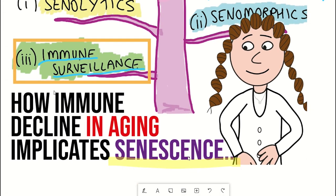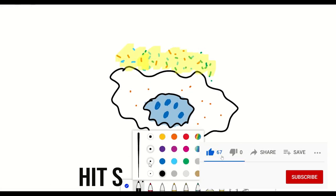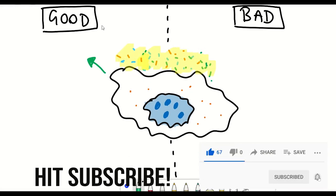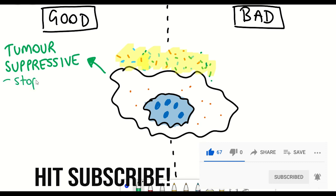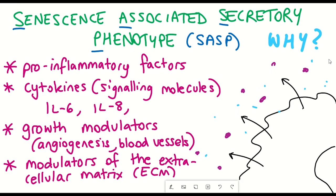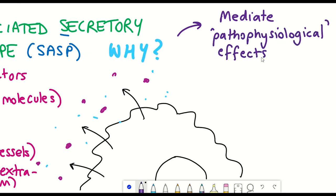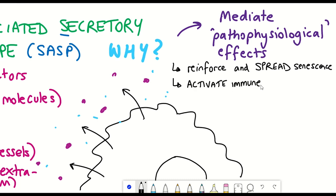If you've been a subscriber for a while, you're probably familiar with cellular senescence and the idea that it is a state that can be thought of as a tumor suppressive mechanism to prevent damaged cells from further replicating. But it also has this senescence-associated secretory phenotype known as the SASP, which is thought to mediate pathophysiological effects such as reinforcing and spreading senescence, and activating the immune system to clear senescent cells.